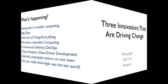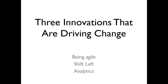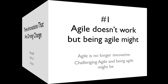So I want to illustrate some of these changes and challenges with examples of the innovations driving change: being agile, shift left, and analytics. The first one — agile doesn't work, but being agile might. I think the belief that agile could solve every problem is kind of foolish. But a whole industry has sprung up about agile practices and selling agile practices and trying to implement agile with a capital A — Scrum, stand-ups, rapid feedback.